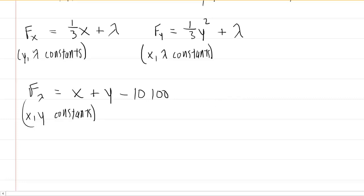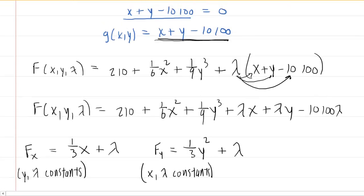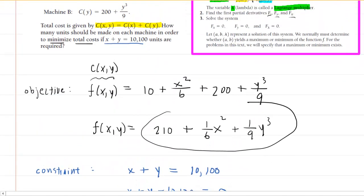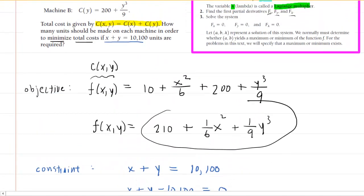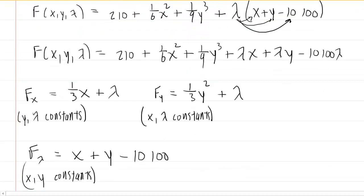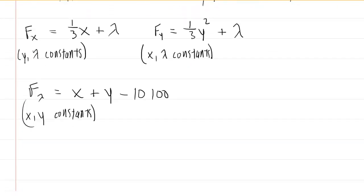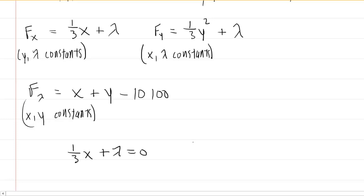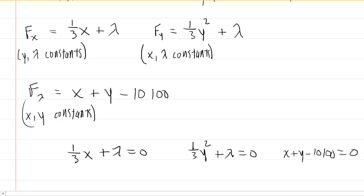We move on to the third and final step, which is to set all of those partial derivatives equal to zero and solve for x, y, and lambda. So we have: (1/3)x + λ = 0; (1/3)y² + λ = 0; and x + y − 10,100 = 0.